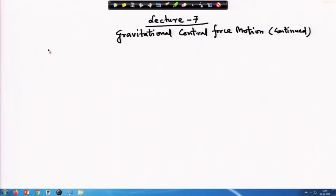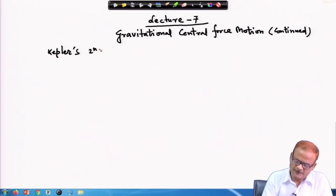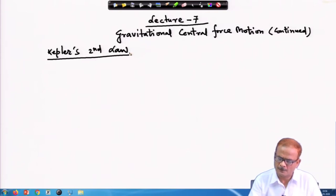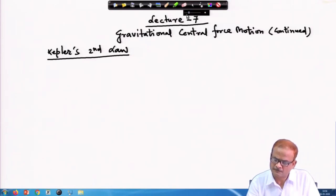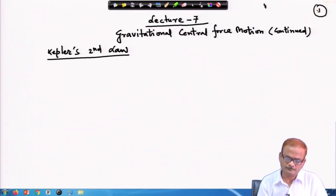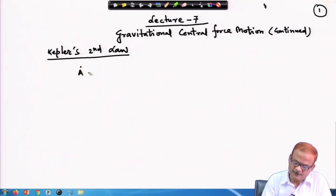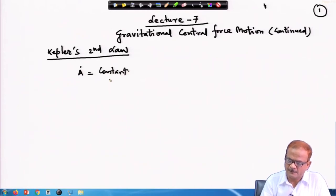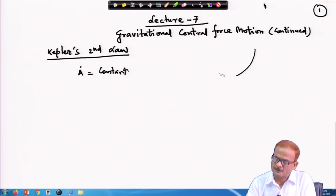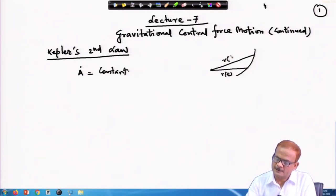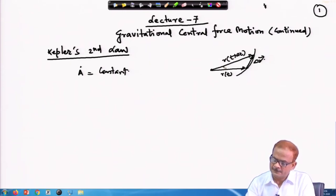The remaining 2 laws are still to be worked out. We will now work out the second law. What we have stated is that a-dot is a constant. We already worked out earlier that if this is the center of attraction or the center of force, and this is r(t) and this is r(t + Δt).